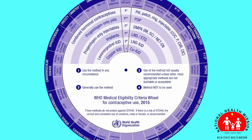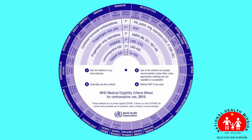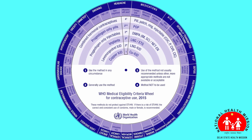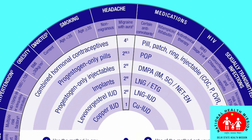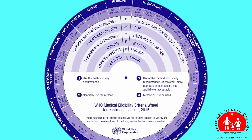The MEC wheel includes the hormonal family planning methods and the copper IUD. It has two moving parts: an inner wheel with the contraceptive methods and an outer wheel with reproductive and medical conditions, plus other factors that may put a woman at risk.